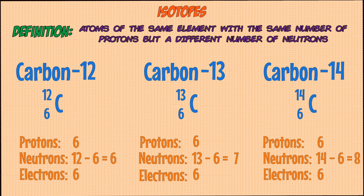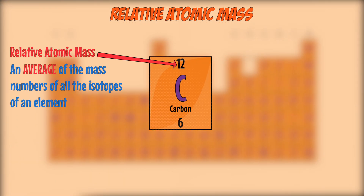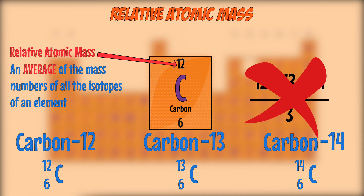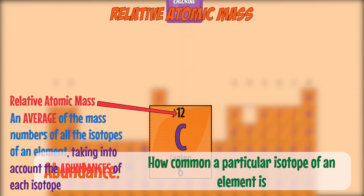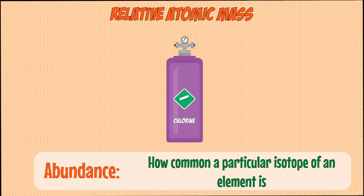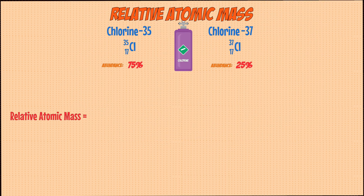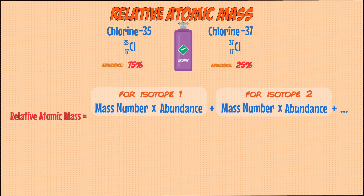You can use information about the isotopes of an element to find its relative atomic mass. Each element has its own relative atomic mass found in the periodic table as the bigger of the two numbers — it's basically an average of the mass numbers of all isotopes, taking into account the abundance of each isotope. If you took a sample of chlorine gas, you would find roughly two different isotopes: chlorine-35 and chlorine-37. Around 75% of the sample would be chlorine-35 and 25% would be chlorine-37. To find the relative atomic mass, multiply the mass number by the percentage abundance for each isotope, add those values together, and divide by 100.